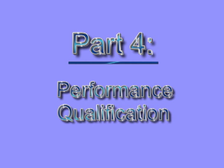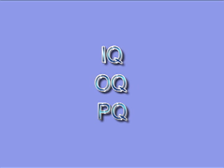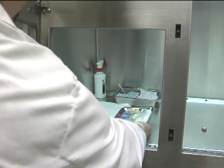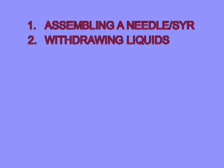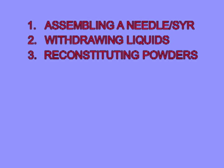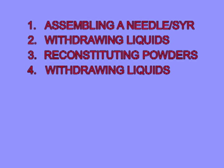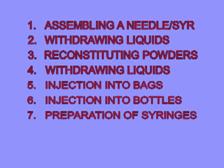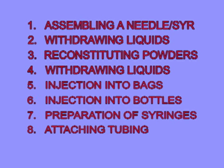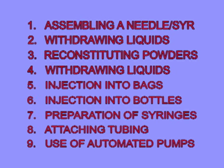Performance Qualification. Upon completion of the installation and operational qualification, the Performance Qualification, or PQ, should be carried out to demonstrate the suitability of both the CAI and standard operating procedures to provide control of CSP compounding processes. During the PQ, substitute sterile microbiological growth media such as TSB in the simulation of the following nine core aseptic techniques: assembling a needle and syringe; withdrawing liquids from single and multi-dose vials; reconstituting powder in a vial; withdrawing liquids from ampoules; injection into bags; injection into bottles; preparation of syringes; attaching tubing; and use of automated compounders and pumps, or gravity transfer systems.